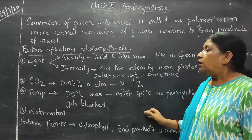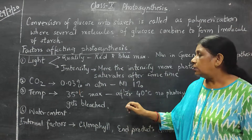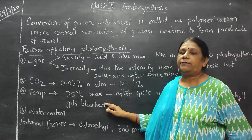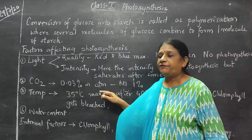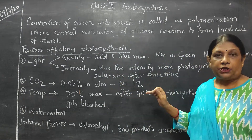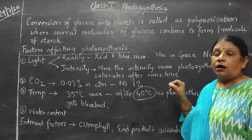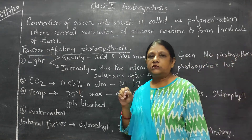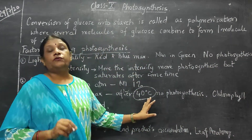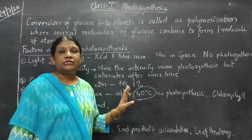Next comes temperature. The temperature of 35 degrees is the maximum at which photosynthesis will take place. After 35 degrees, photosynthesis will start decreasing, and at 40 degrees centigrade, no more photosynthesis will take place. Why? This is because chlorophyll gets weak.